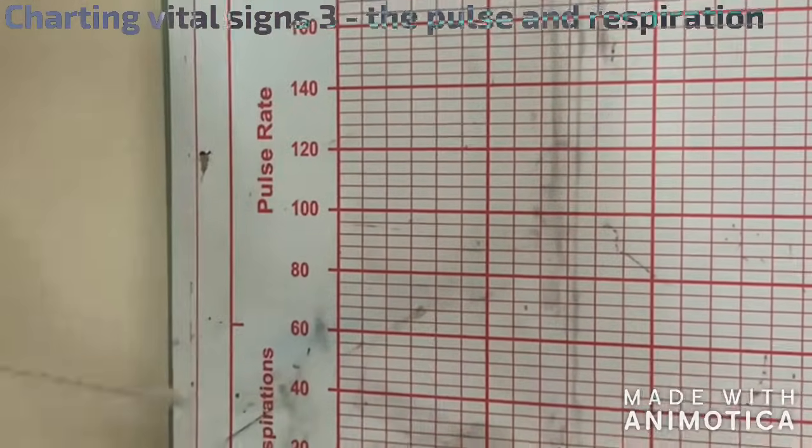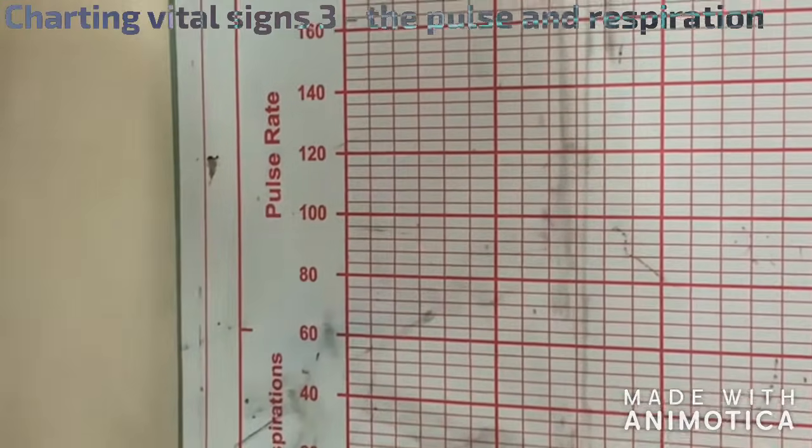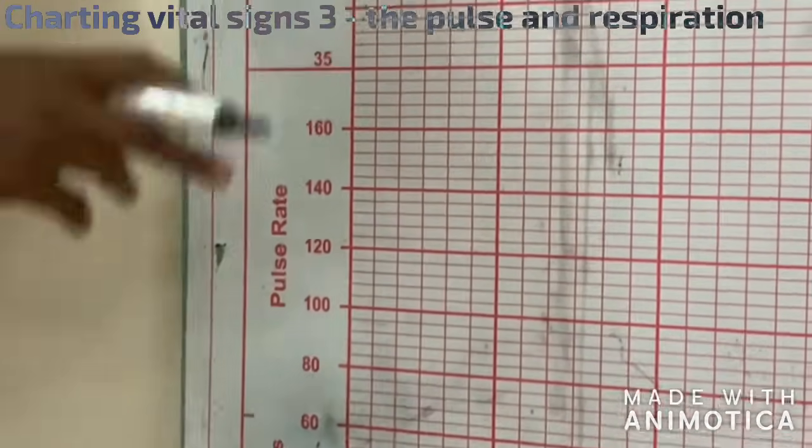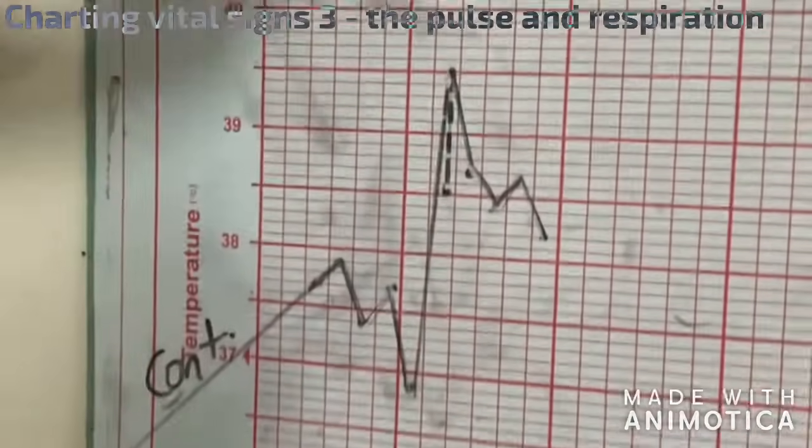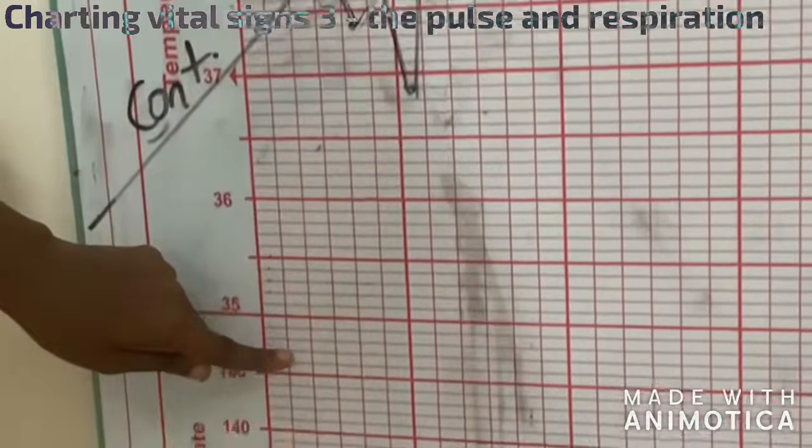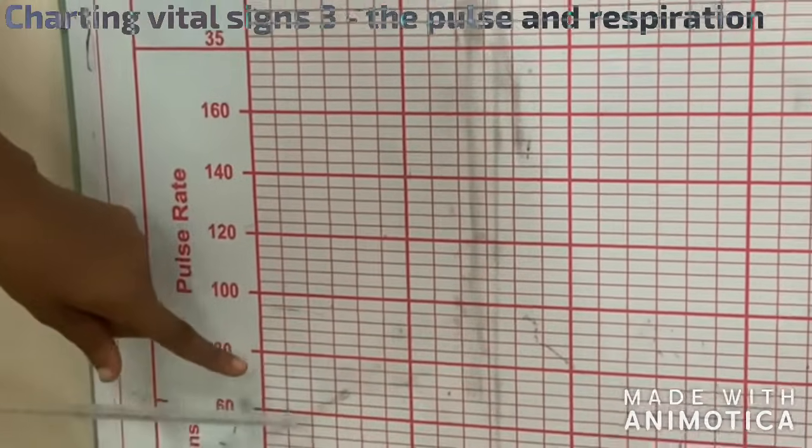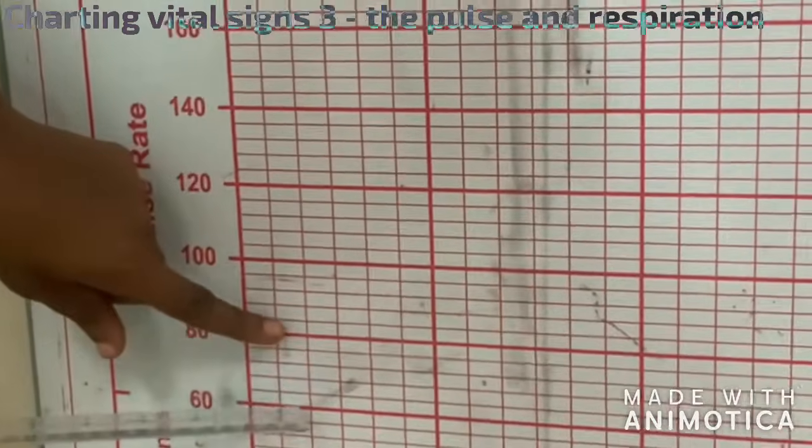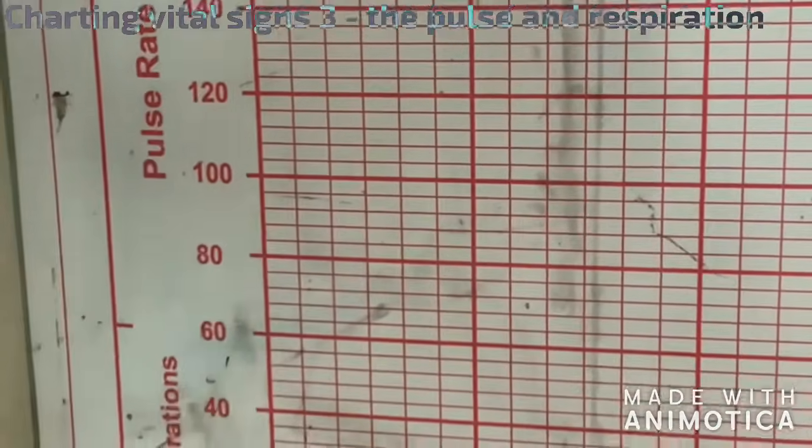Now let's look at a patient's pulse is 72. Let's say at 6 a.m. So you come and look for your 6 a.m. and trace it down to the pulse section and chart 72. So this is 60, 64, 68, 72, this is 72.